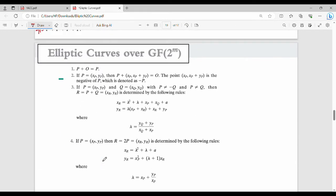The second type is elliptic curves over GF(2^m). The first property remains the same. The second property has one change: if P = (xₚ, yₚ), then the negative is -P = (xₚ, xₚ + yₚ).